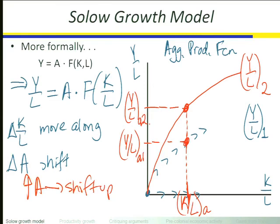One of the questions we have to answer is where on this production function does the economy wind up — way down towards the origin with a very low level of capital per worker and therefore very low output per worker? Or at a very high level with lots of machines per worker and high standards of living? The answer to where on the aggregate production function the economy lands is one of the things we focus on in macro. Where we wind up depends primarily on the value of capital per labor, K over L.